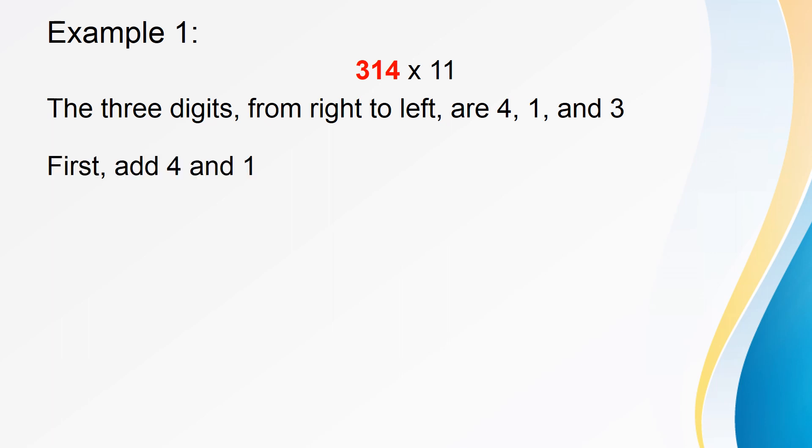Here is an example for better understanding. Consider the number 314. Moving from right to left, the 3 digits of this number are 4, 1 and 3. Now, add 4 and 1 which gives the sum as 5.